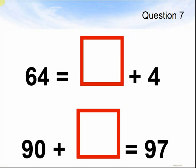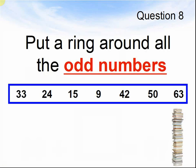Here comes question 8. Put a ring around all the odd numbers: 33, 24, 15, 19, 42, 50 and 63. Pause the video until you are ready for question 9.